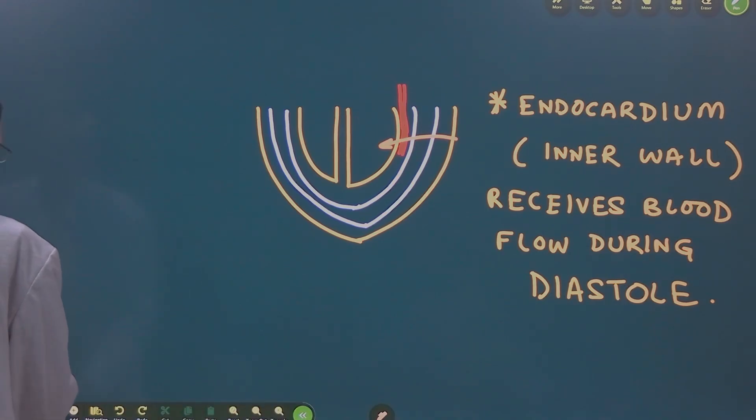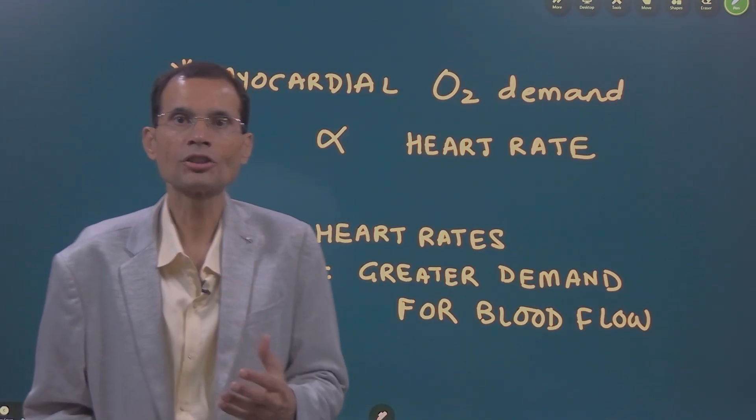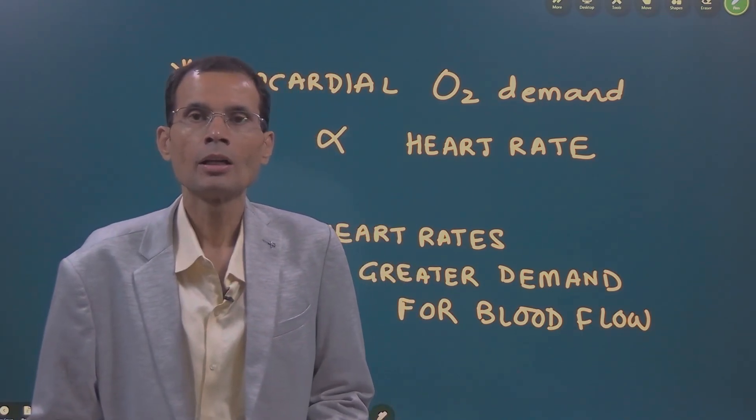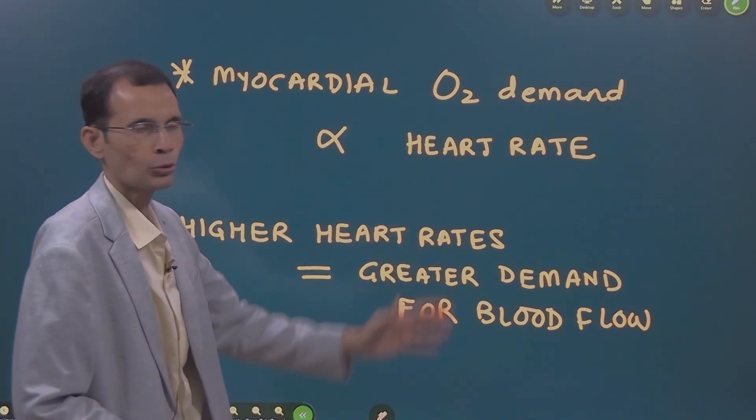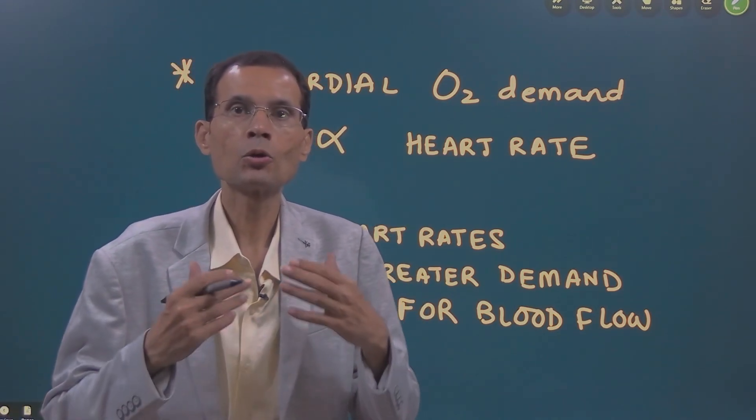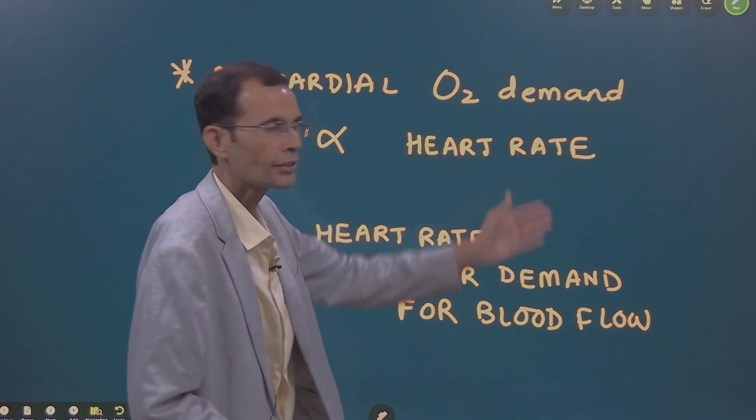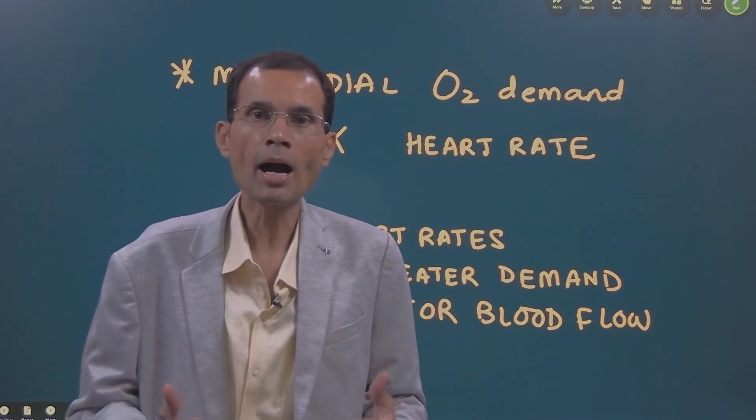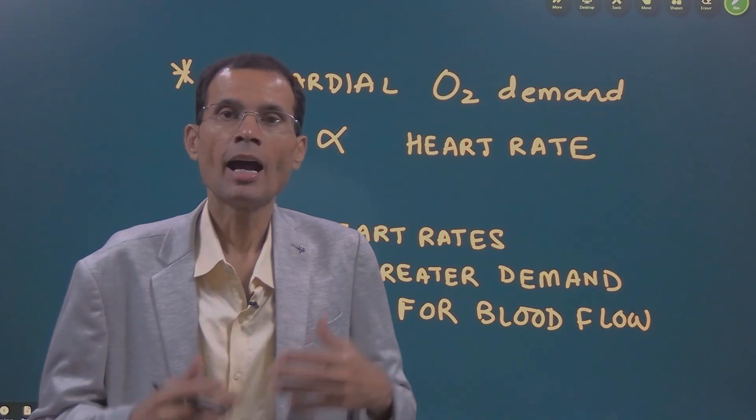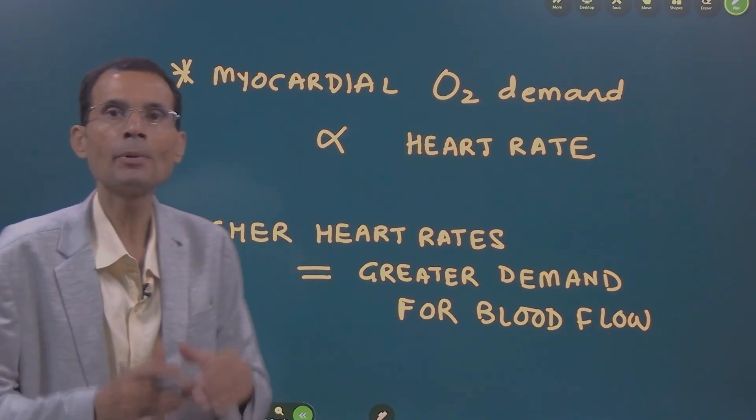Now, the second point, myocardial oxygen demand. As the heart rate goes on increasing, the myocardial oxygen demand goes increasing proportionately. So, at higher heart rates, there is a greater demand for oxygen supply and it can be met only with one thing by increasing the blood flow.